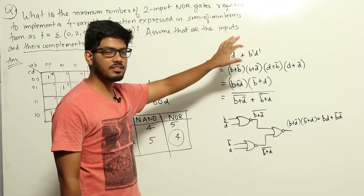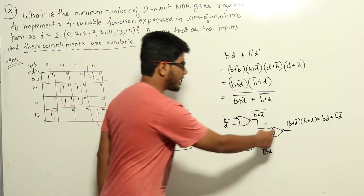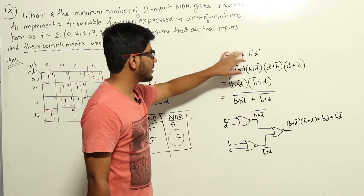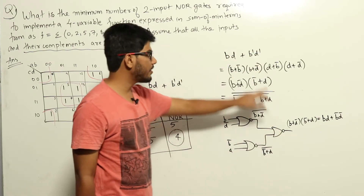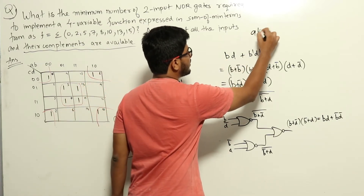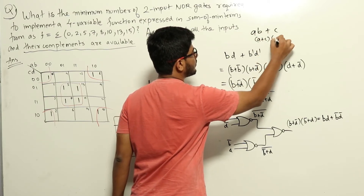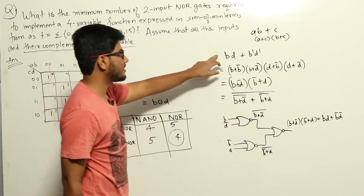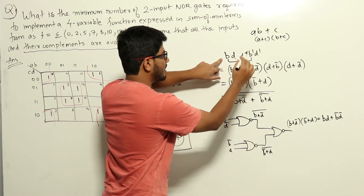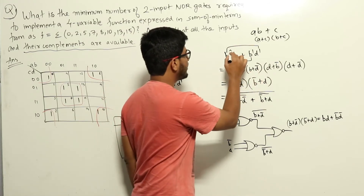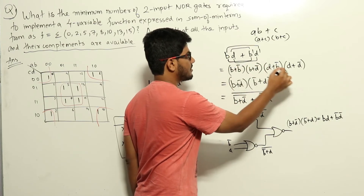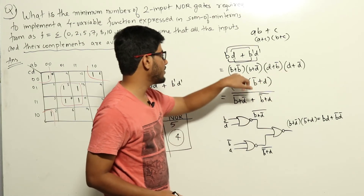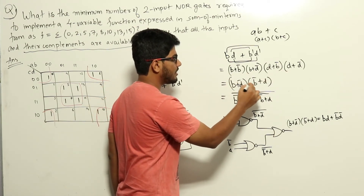We need to implement BD + B'D' using NOR gates, so the final output should be in the form (something + something) complement. Applying the distributive law — AB + C can be rewritten as (A + C)(B + C) — we rewrite BD + B'D' as (B + B')(B + D')(D + B')(D + D'). Since B + B' = 1 and D + D' = 1, those terms drop out, leaving (B + D')(B' + D).